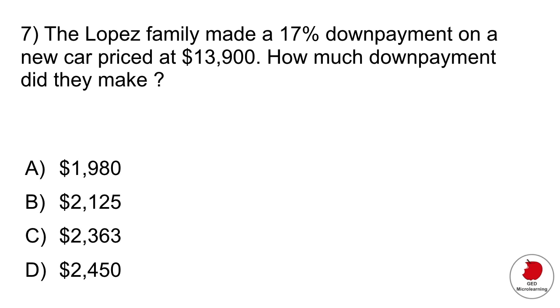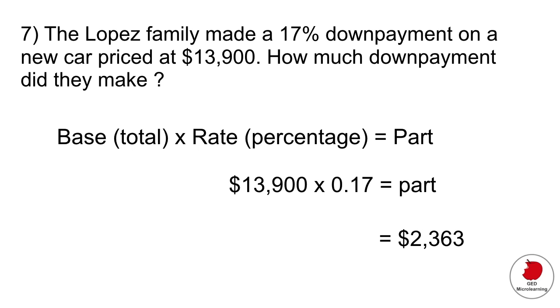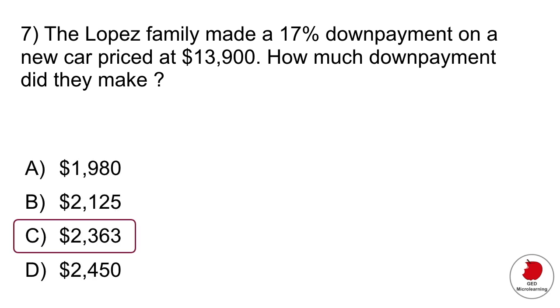The next question involves percentages. It says the Lopez family made a 17% down payment on a new car priced at $13,900. How much down payment did they make? For this sort of question you want to remind yourself of this percentage rule which tells you that if you have the total price for something or the base and you multiply it by the rate or the percentage - in this case the percentage is that 17% down payment - you can find out the part, the down payment in this case. So you would just plug your numbers in like this and that tells you the down payment which was $2,363, option C.